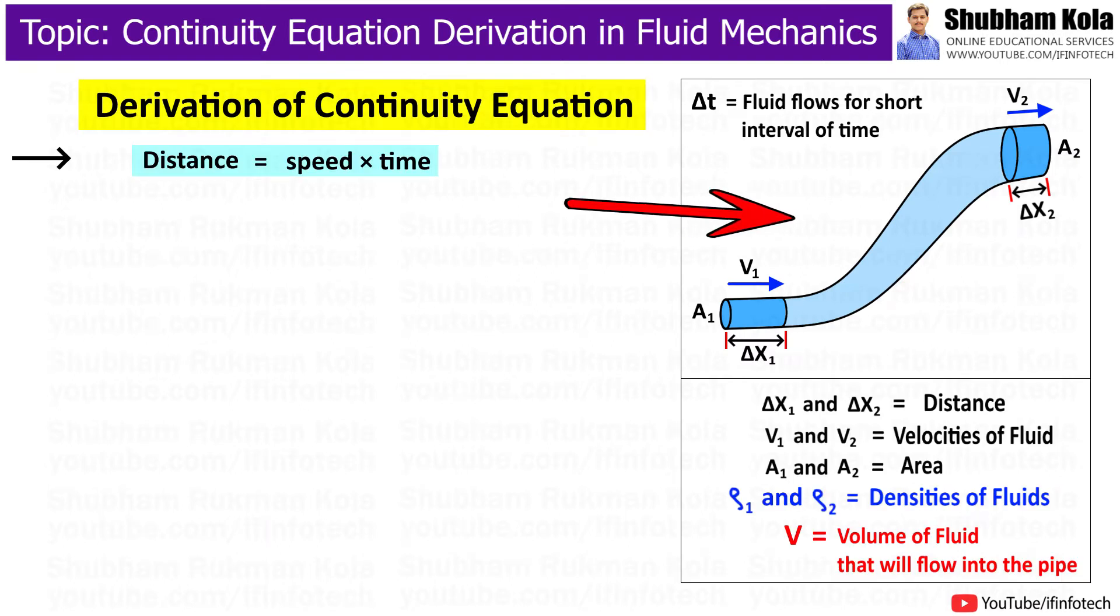Now consider the fluid flows for a short interval of time in the tube, so assume that as delta t. In this time, the fluid will cover a distance of delta x1 with a velocity v1 at the lower end of the pipe.